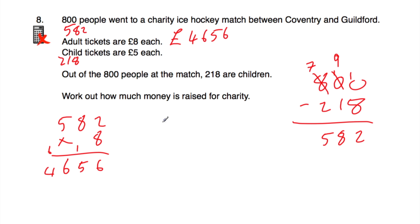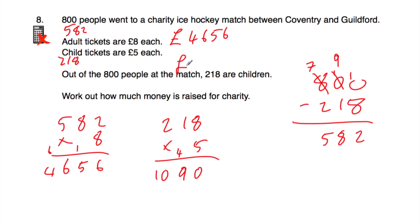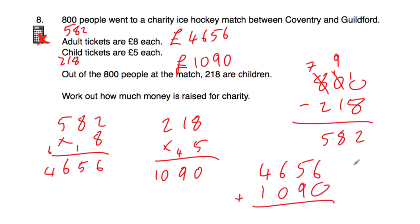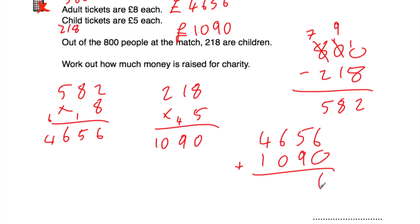For the children: 218 of them each pay £5. 5 times 8 is 40, put our 0 down, carry 4. 5 times 1 is 5 plus 4 is 9. 5 times 2 is 10. So the children's tickets cost £1,090 in total. Adding the adults and children together: 4,656 plus 1,090. 6 plus 0 is 6, 5 plus 9 is 14, put our 4 down carry 1, 6 plus 0 plus 1 is 7, 4 plus 1 is 5. The total amount raised for charity is £5,746.